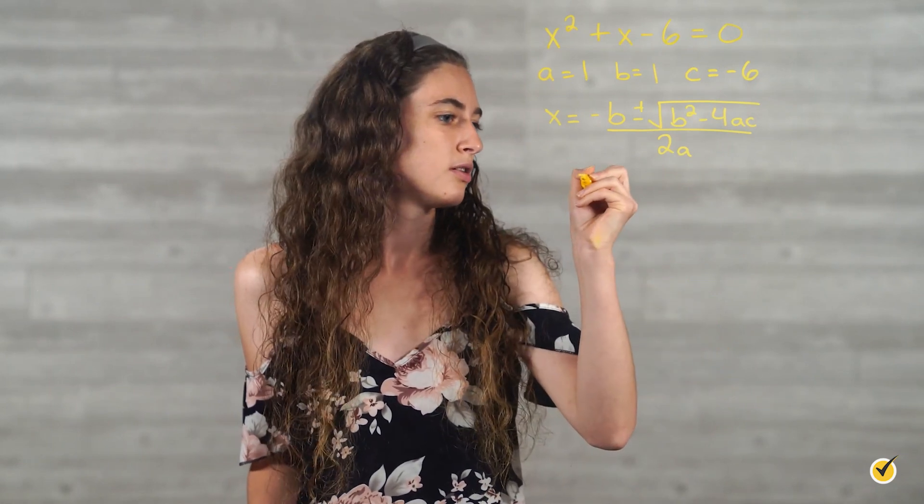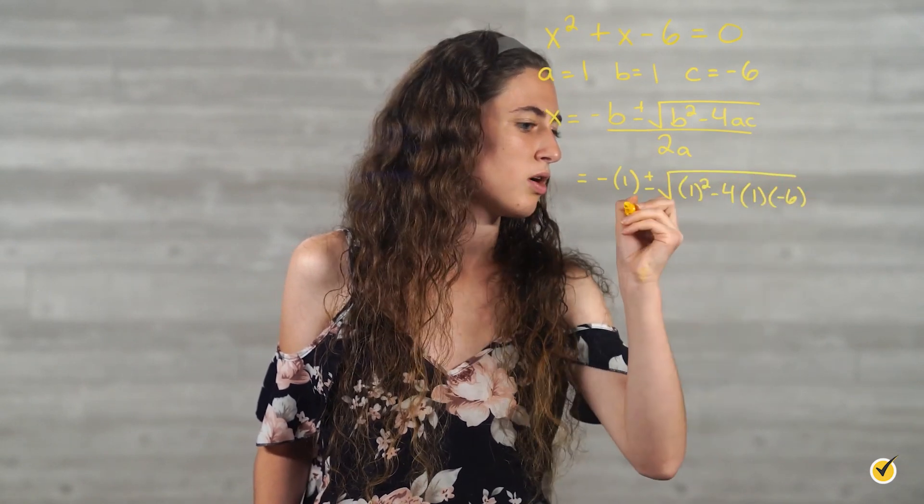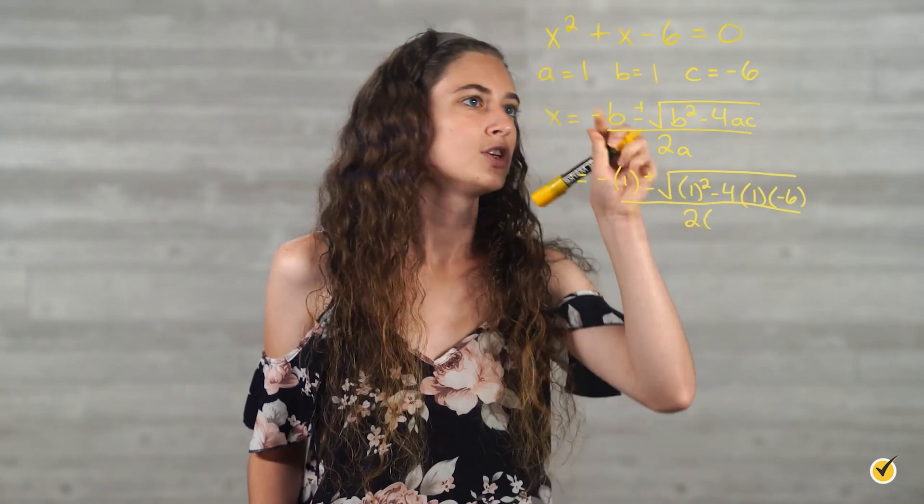Next, substitute the values for a, b, and c into the quadratic formula. So let's write out our quadratic formula again: x is equal to negative b plus or minus the square root of b squared minus 4ac all over 2a. Now we're going to plug in our a, b, and c. So x is equal to negative 1 plus or minus the square root of 1 squared minus 4 times 1 times negative 6, all over 2 times 1.